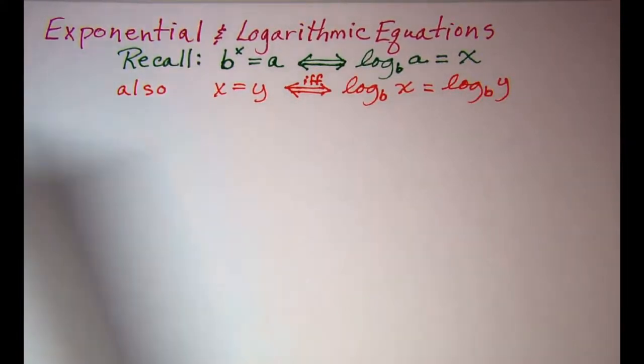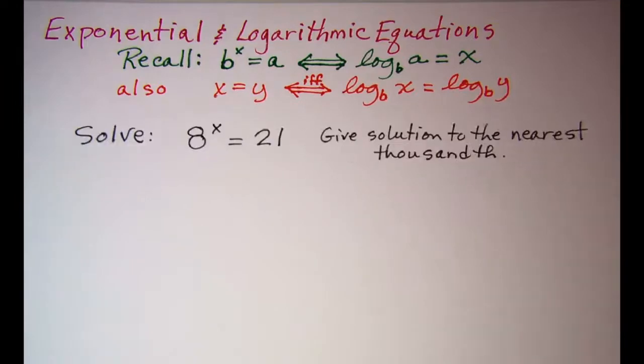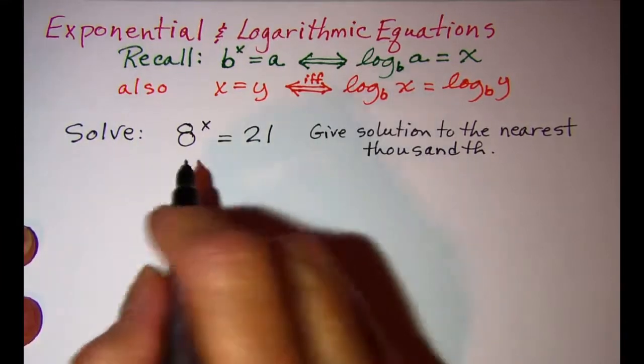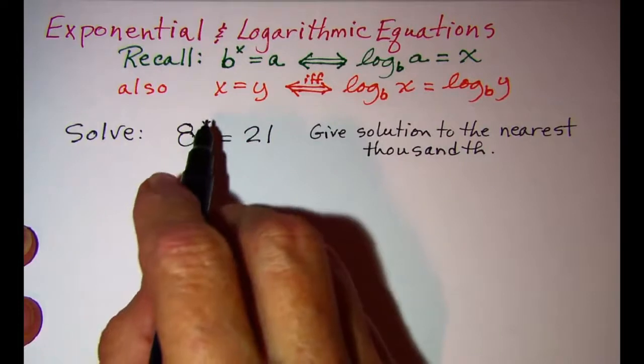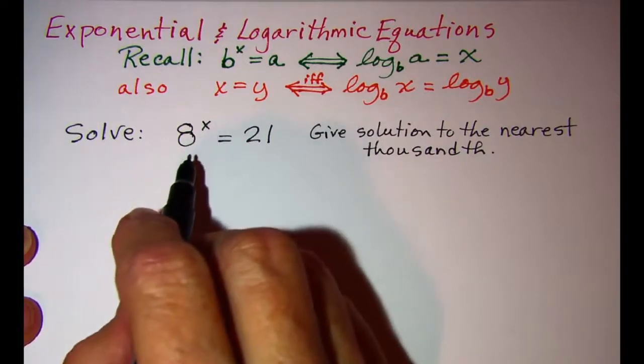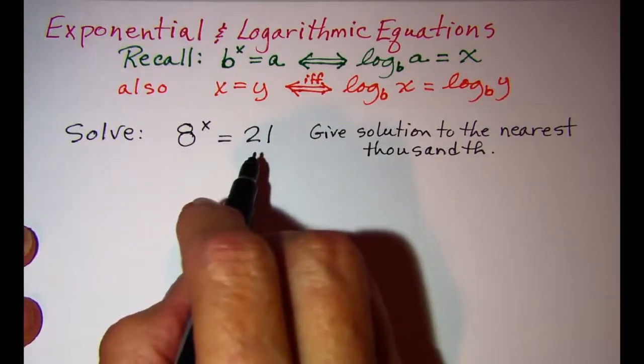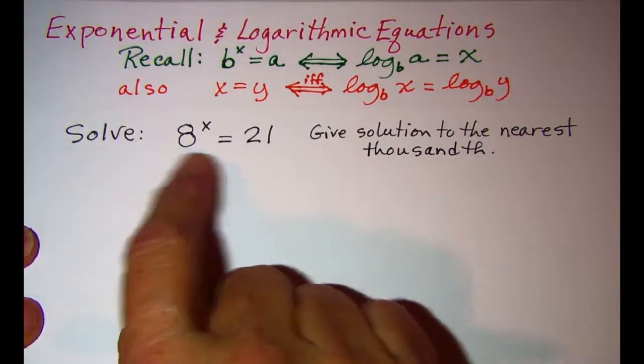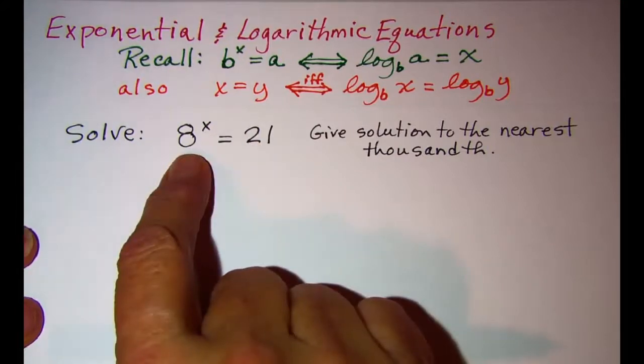Now our example that we're going to be working with is solve 8 to the x power equals 21. Anytime we have a variable in the exponent we need to use logarithms to solve, unless of course we could have written these bases with the same base, but in this case it's not possible.